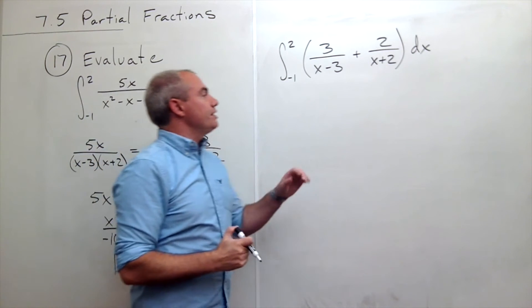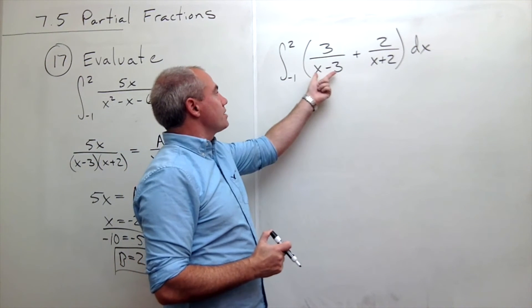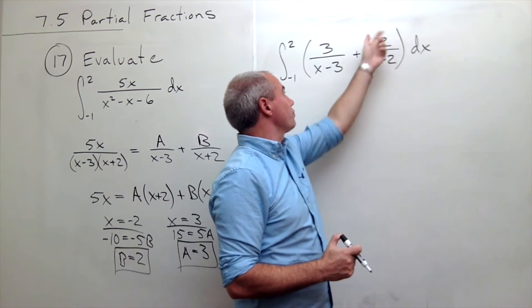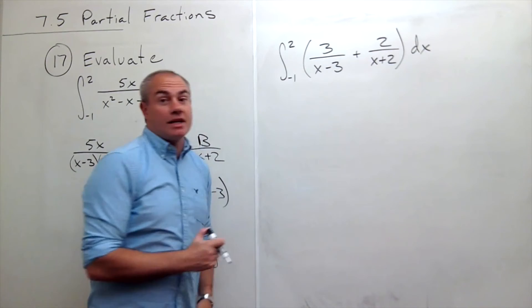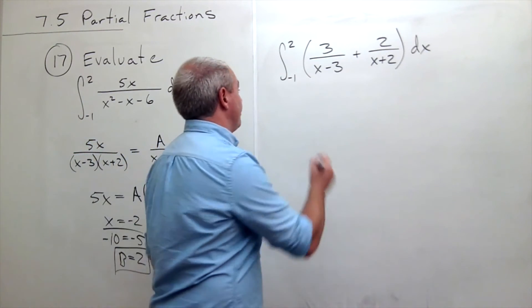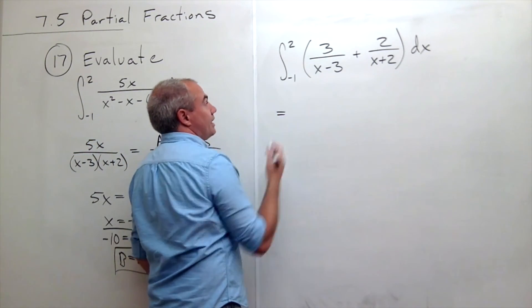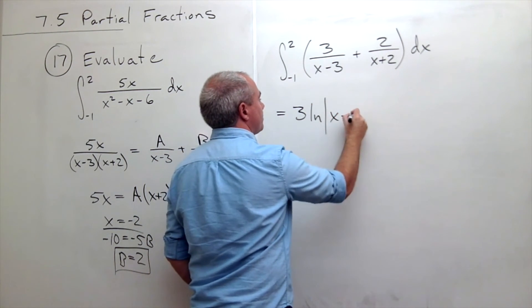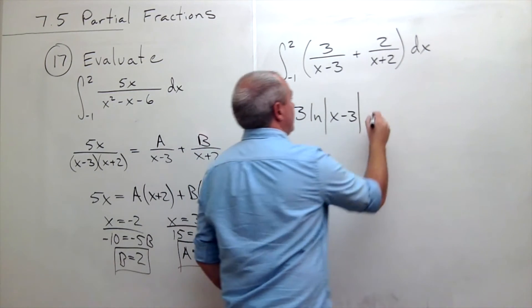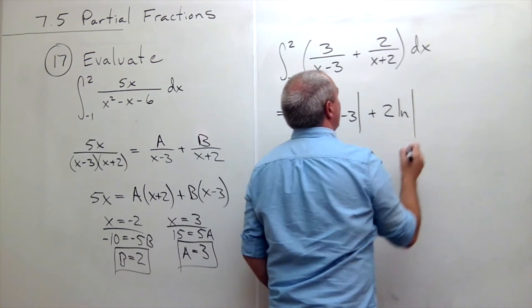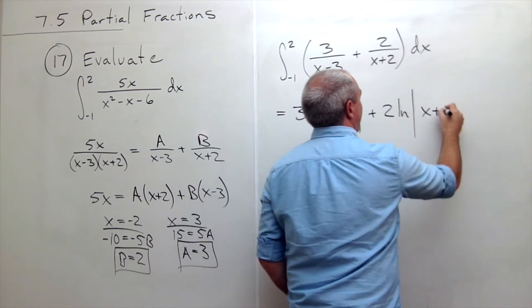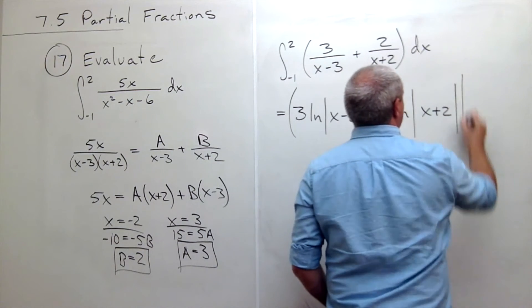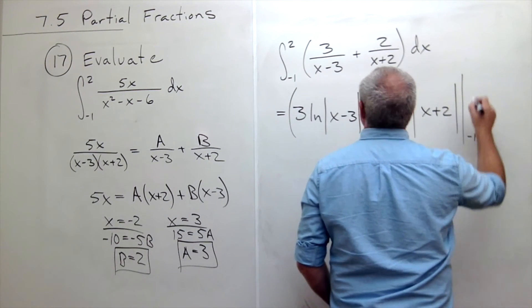All right, are these natural logs? The derivative of x minus 3 is 1. The derivative of x plus 2 is 1. So if we just pull the constant out to the side, it's a natural log. So I can rewrite this. Take the antiderivative. I get 3 times ln of absolute x minus 3 plus 2 times ln of absolute x plus 2. All of that evaluated from negative 1 to 2.